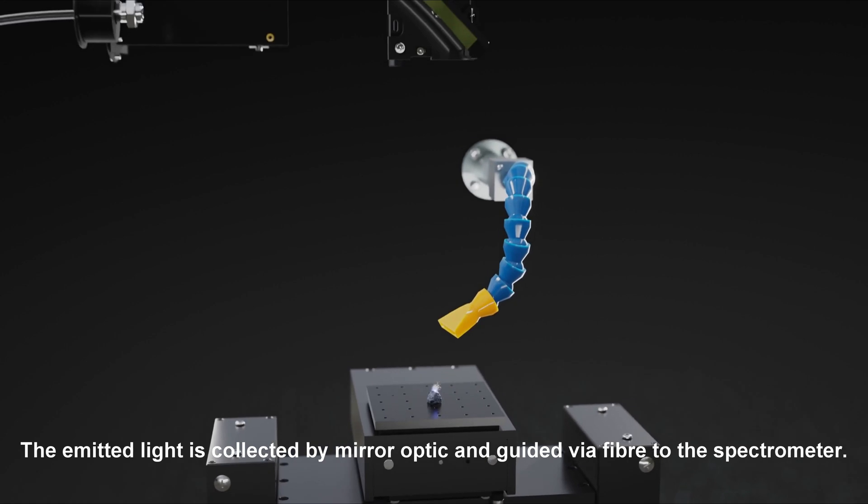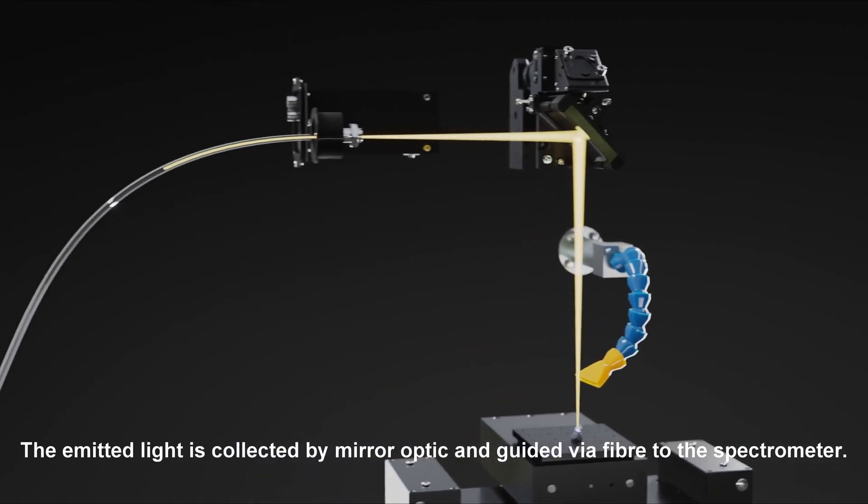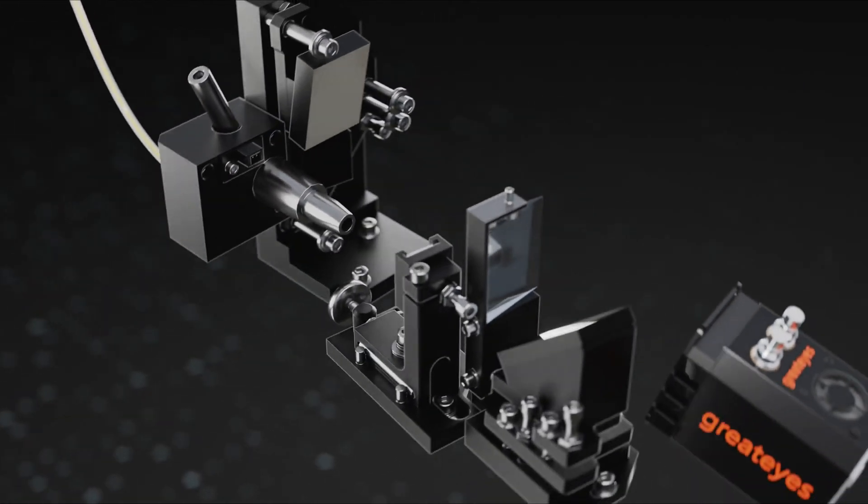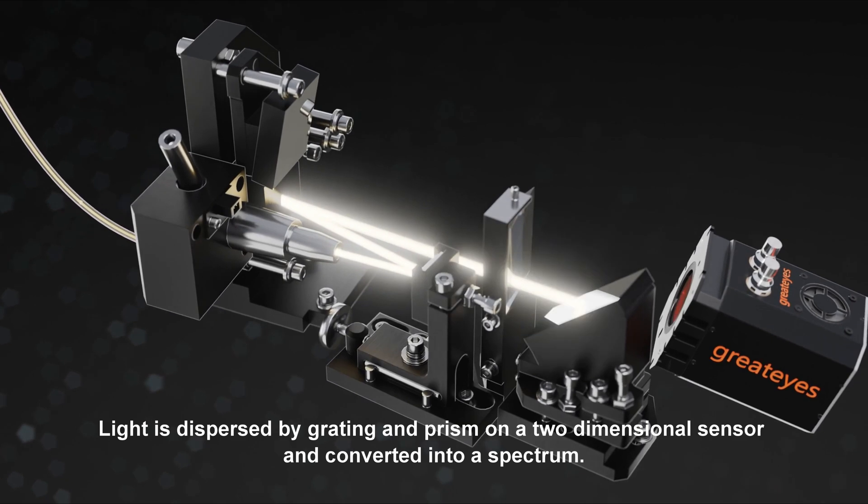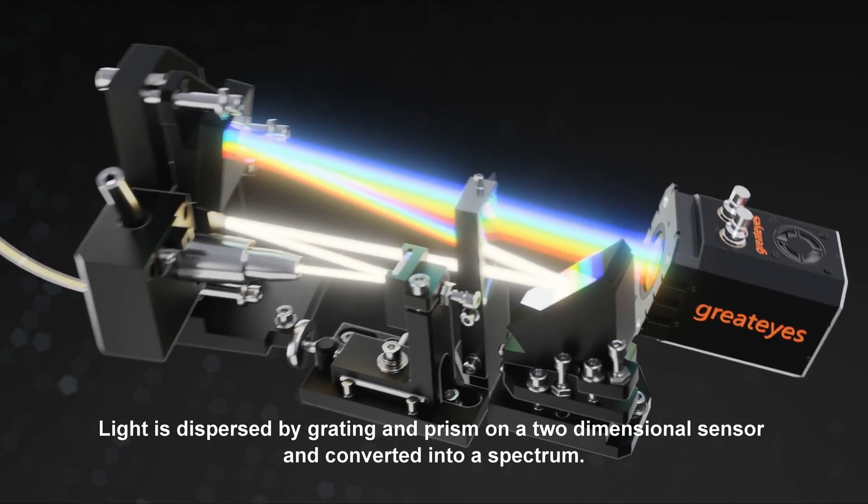The emitted light is collected by mirror optics and guided via fiber to the spectrometer. Light is dispersed by grating and prism on a two-dimensional sensor and converted into a spectrum.